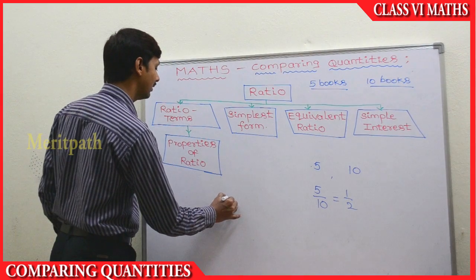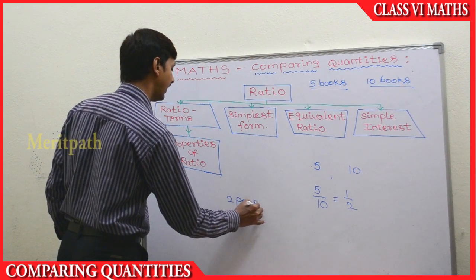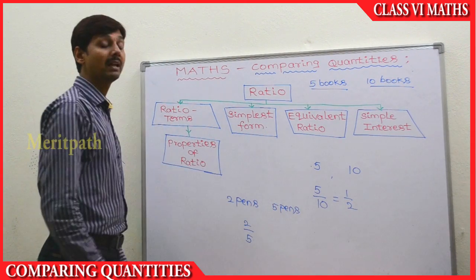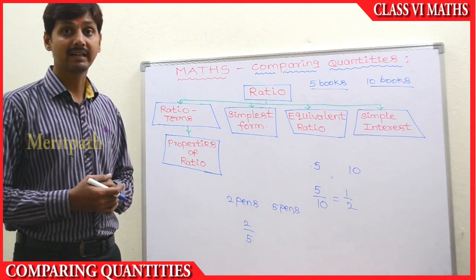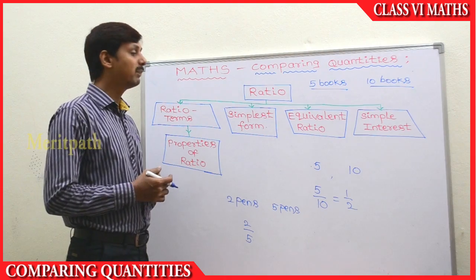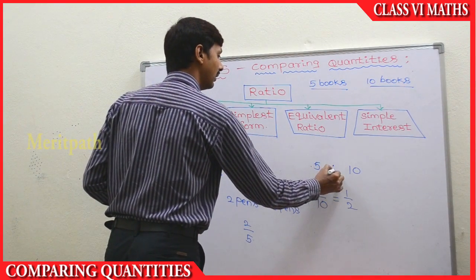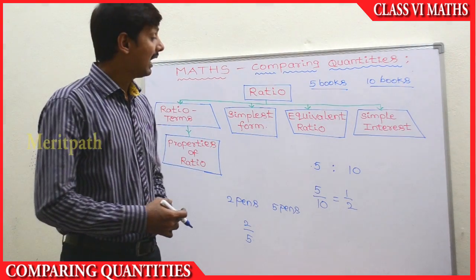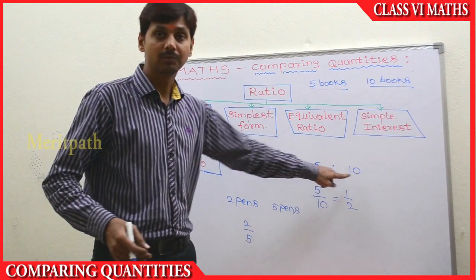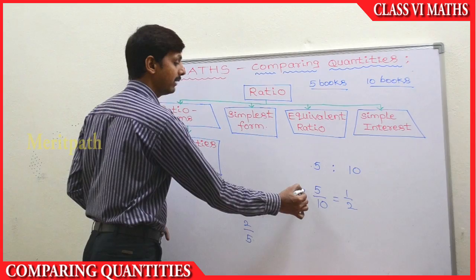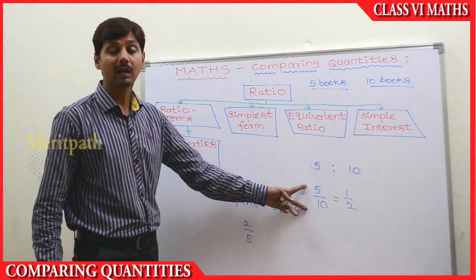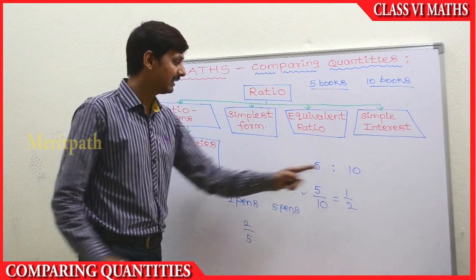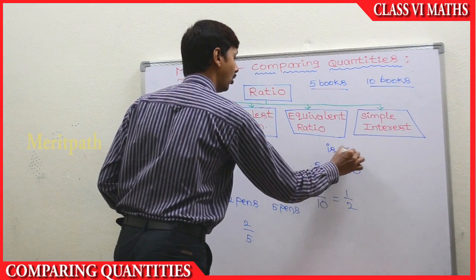If you want to take any other thing, like two pens and five pens, when we compare these two by division, we call it ratio. Ratio is represented by the symbol of two vertical dots, like this. So it is called as 'five is to ten.' This can also be written as five by ten — the division form. So the ratio is five is to ten.